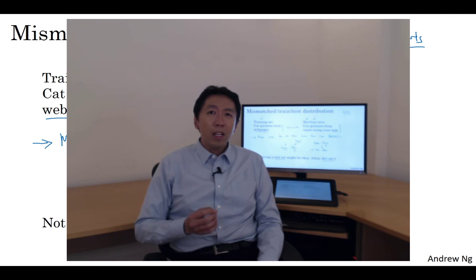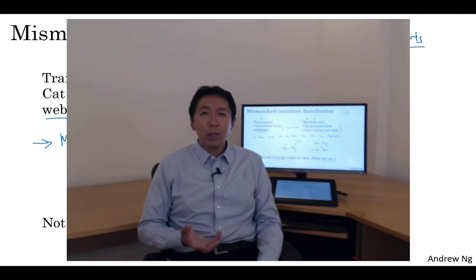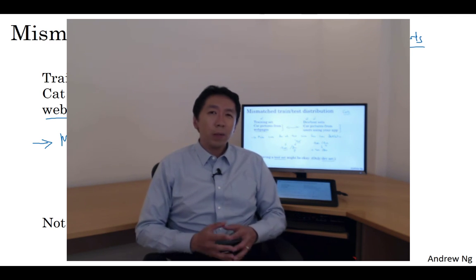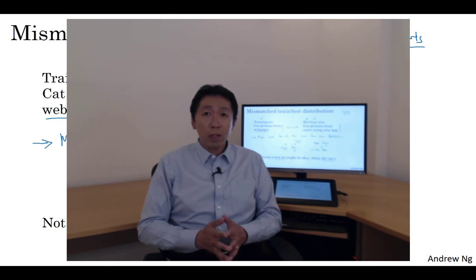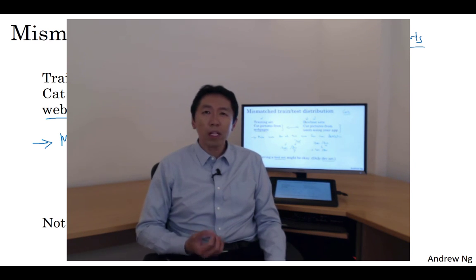So having set up a train, dev, and test set will allow you to iterate more quickly. It will also allow you to more efficiently measure the bias and variance of your algorithm, so they can more efficiently select ways to improve your algorithm. Let's start to talk about that in the next video.